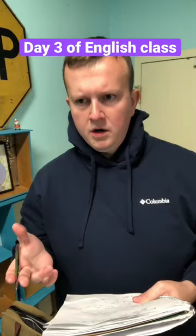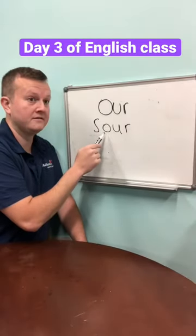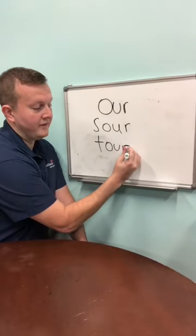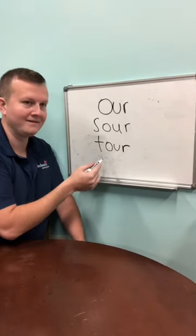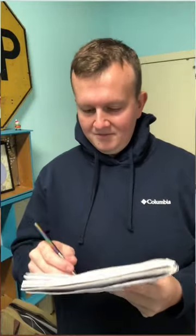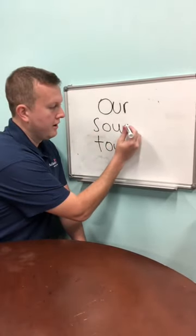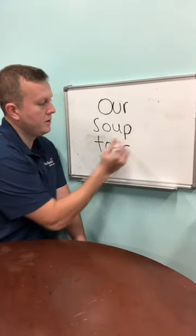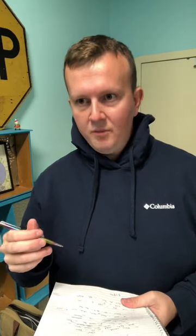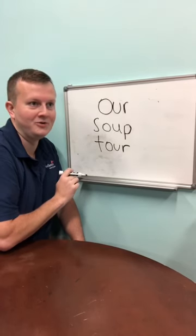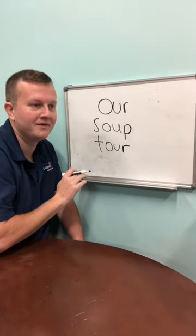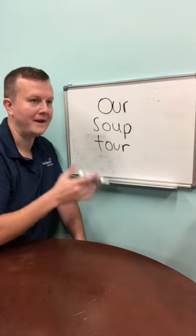This word is 'our,' this word is 'sour,' this word is 'tower.' You don't see how it's the same? If we take this 'r' and make it a 'p,' what's this word now? It'd be 'saup,' as in chicken noodle saup? No, it's 'soup.' You don't see how it works? The 'p' makes the 'ou' sound.